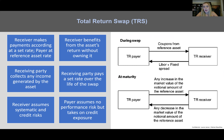The total return swap payer will give any increase in the market value of the notional value of the asset to the receiver, and any decrease in market value will be paid back by the receiver — settling that difference at maturity.